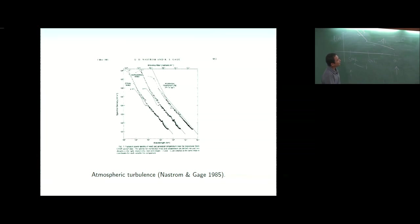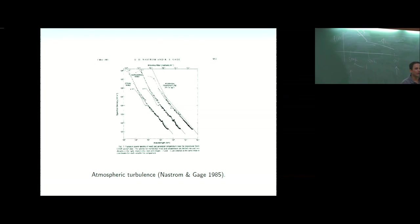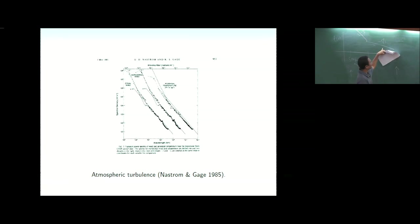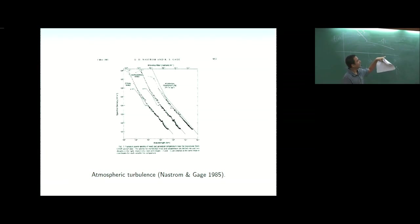Furthermore, people revisited the data and computed energy fluxes. The energy spectrum alone is non-unique — you need the flux to pin down the physics, because a k^{-5/3} spectrum could be a 3D forward cascade or a 2D inverse cascade; you can't distinguish without knowing the direction of energy transfer.